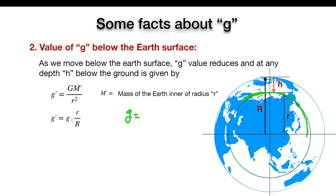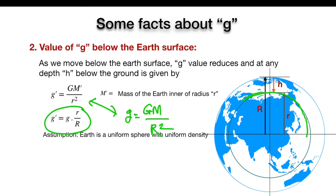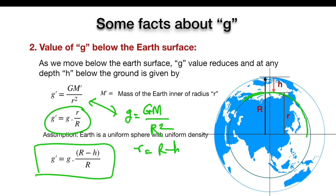Since g = GM/R², using these two equations we can derive the expression for g at depth. When deriving these equations, we assume that the Earth is a uniform sphere with uniform density. Since small r = R − h, you can rewrite the same equation in another form.